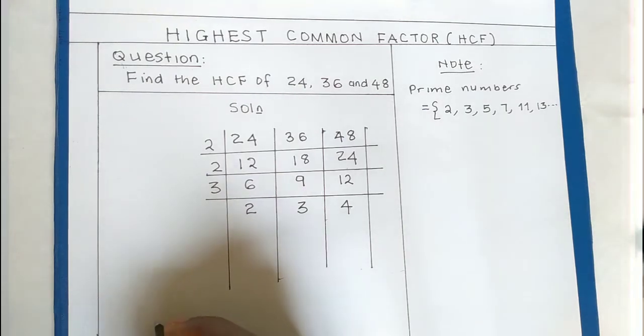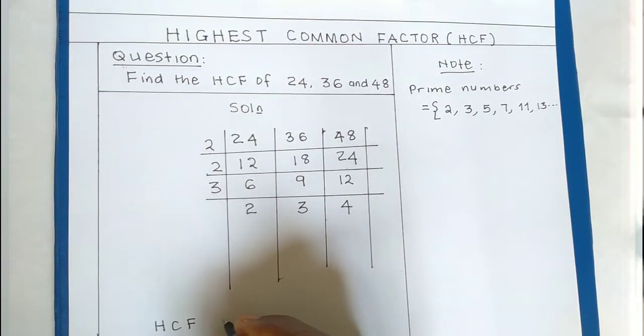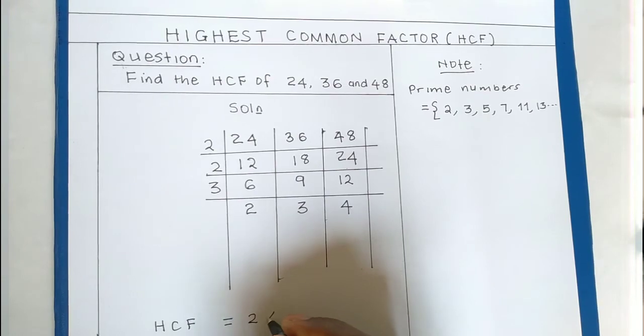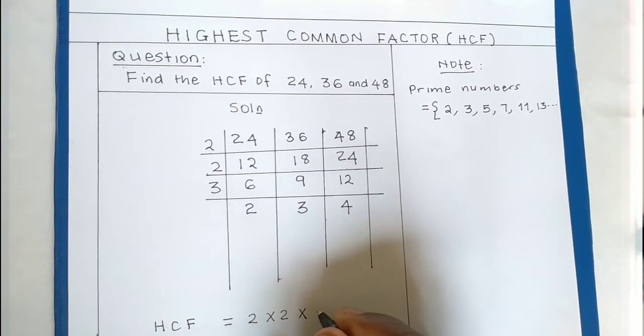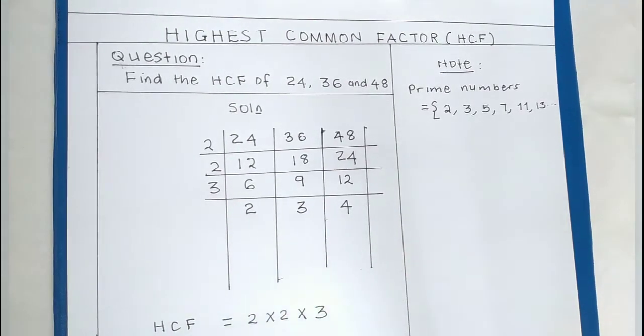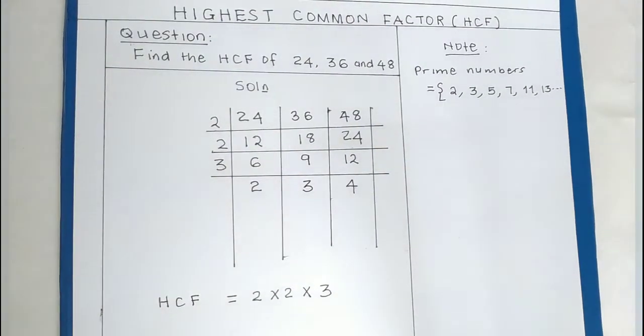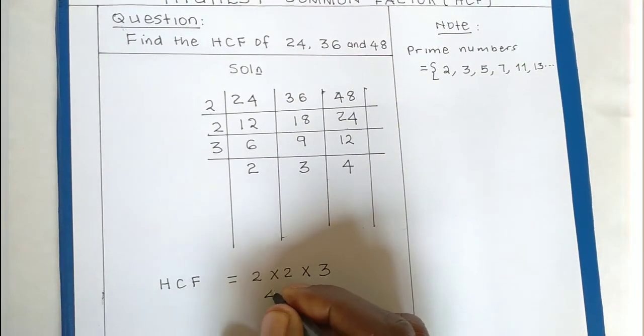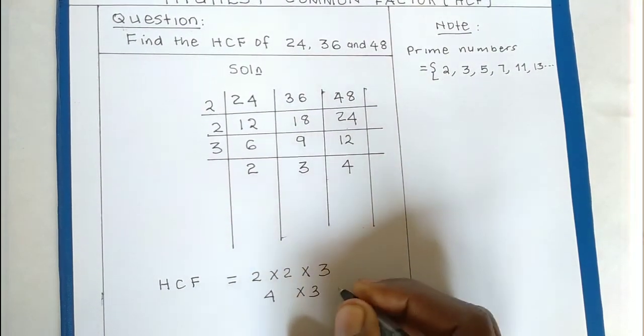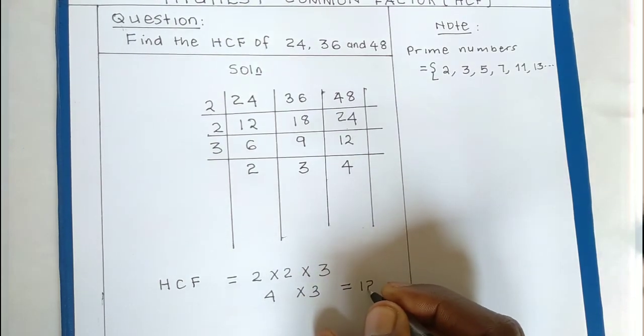So now the HCF of these numbers is 2 times 2 times 3. We get 4 times 3, and the answer gives you 12.